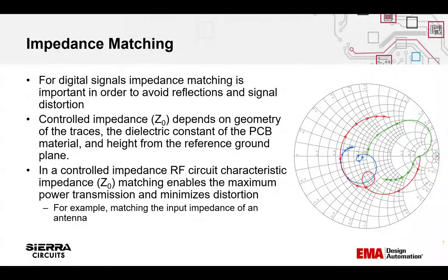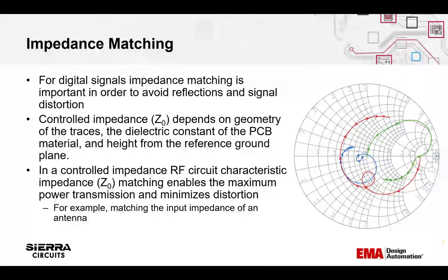Impedance matching is important for both digital and RF analog circuits. For digital circuits, reflections can distort the signal resulting in data transfer errors. Impedance matching is a crucial aspect of RF PCB design as it ensures efficient power transfer and signal integrity between RF components, transmission lines, and antennas.